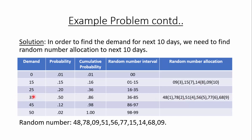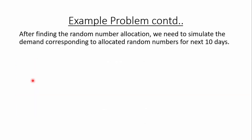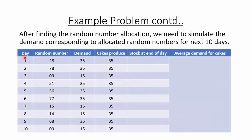After finding the random number allocation, we simulate the demand corresponding to allocated random numbers for the next 10 days. We have days 1 to 10, the corresponding random numbers given in the problem, and the corresponding demands calculated from our table — random number 48 gives demand 35, random number 78 gives demand 35, random number 9 gives demand 15, and so on.